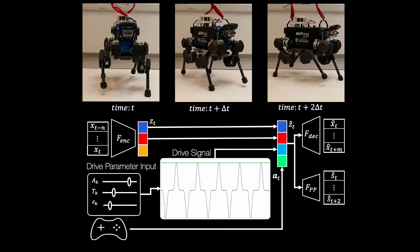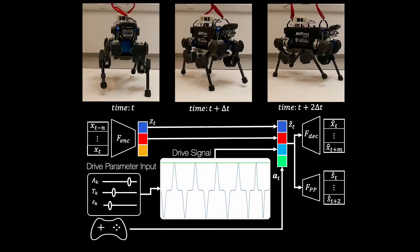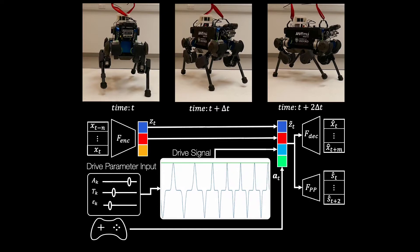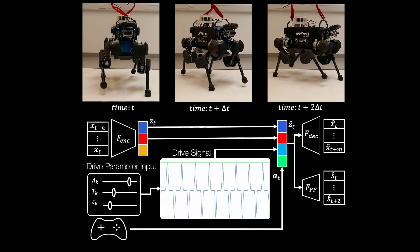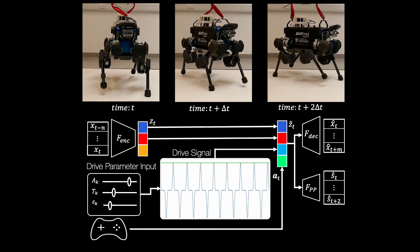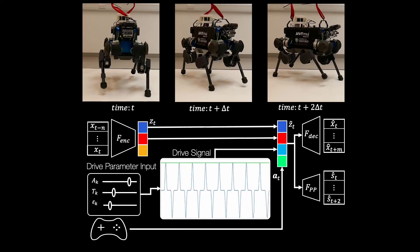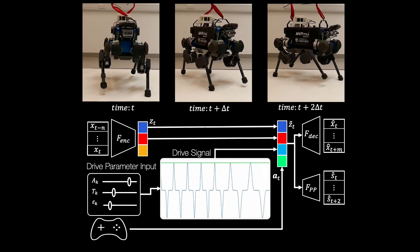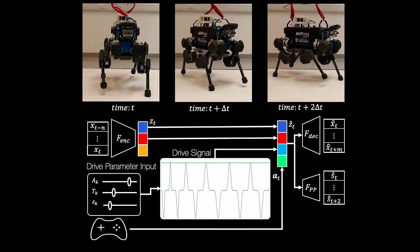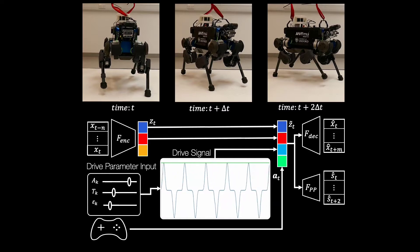We address these limitations by learning a generative model over locomotion data. This creates a structured latent space and enables detection and mitigation of disturbances. Specifically, we use a variational autoencoder, or VAE, to create our structured latent space which acts upon the robot state.